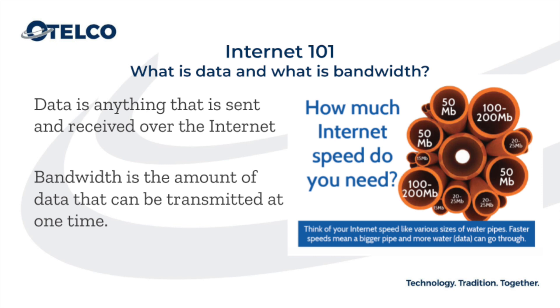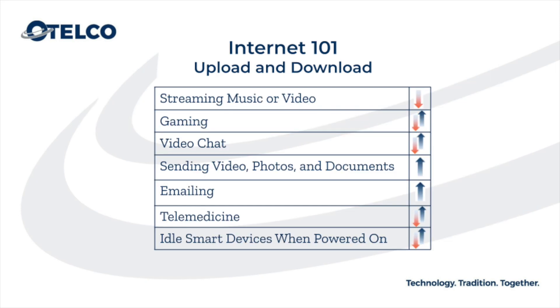So 5 megabits per second means that it takes one second for 5 megabits of data to travel through the pipe. We'll talk more about data in a minute, but for now it's important to understand that bandwidth refers to the size of your pipe.